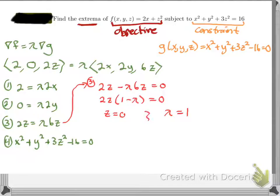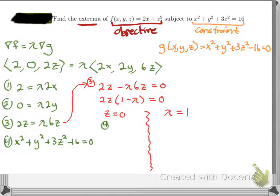For each of those solutions, I want to find an ordered triple (x, y, z). In previous problems we needed just x and y, but here we have a third variable. So if z = 0, I can use equation 4 and realize that with z = 0, I end up with x² + y² = 16.